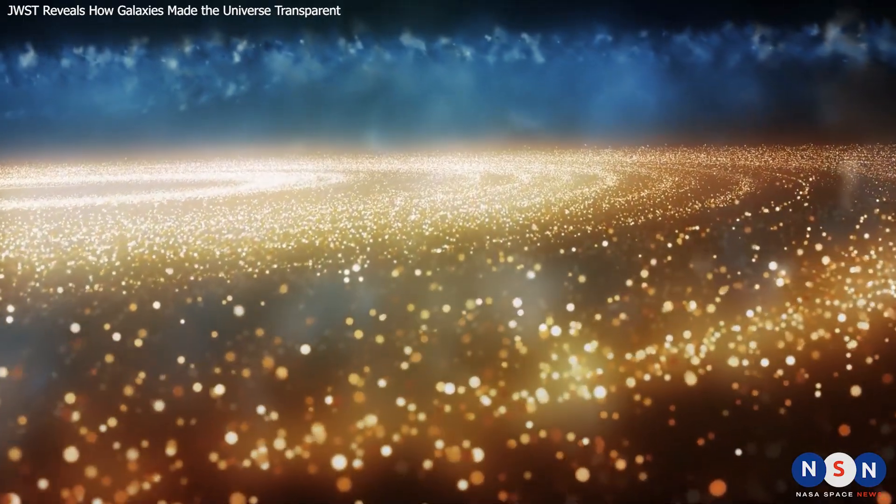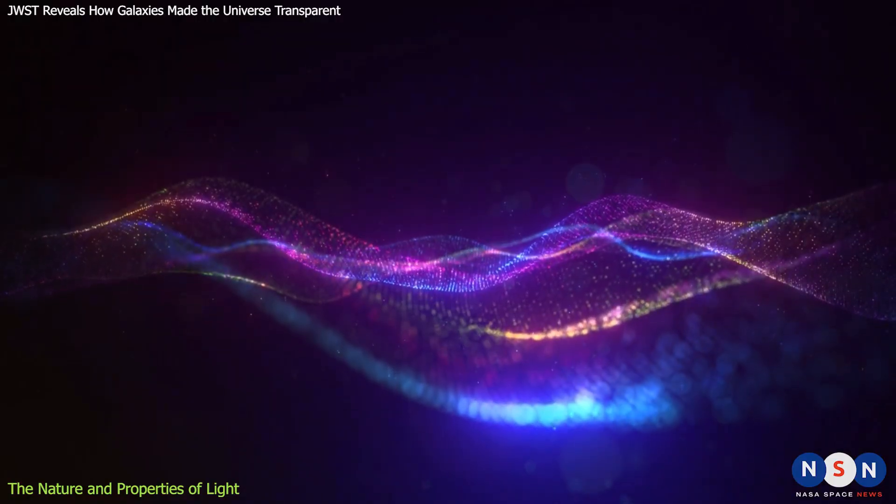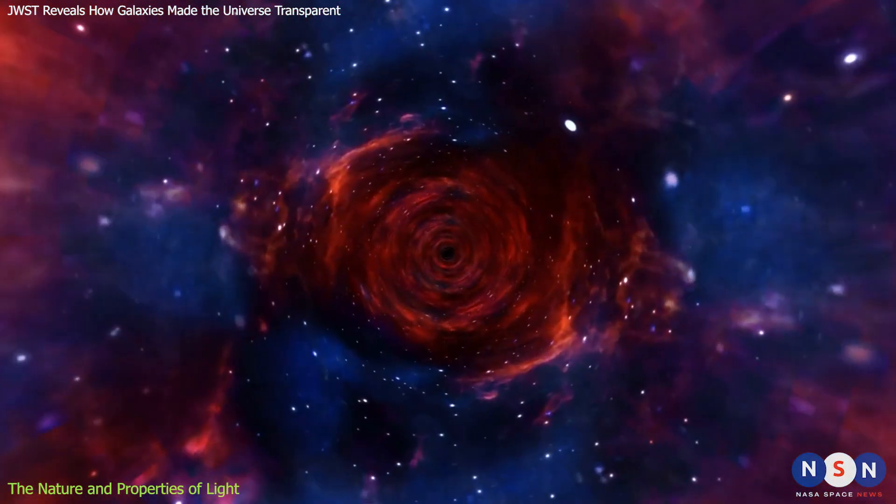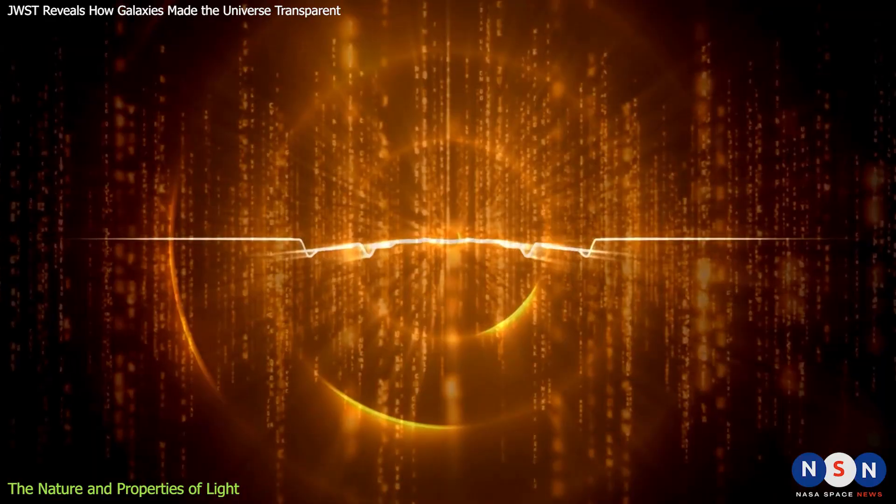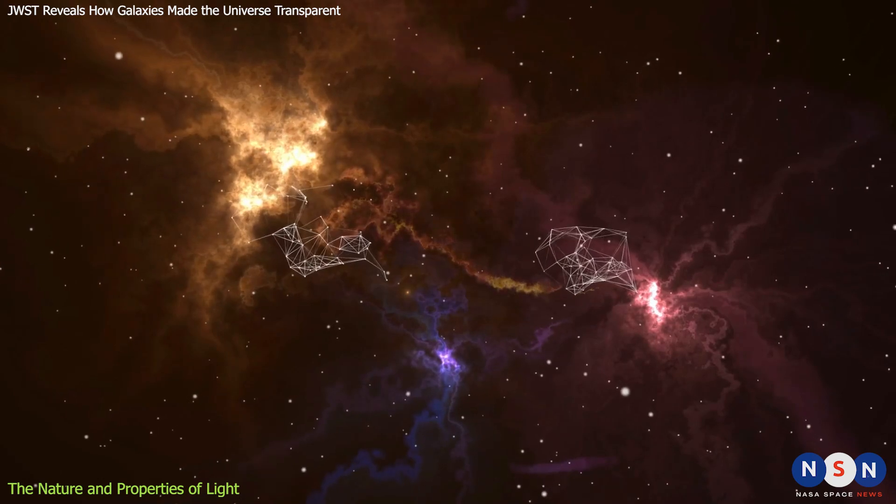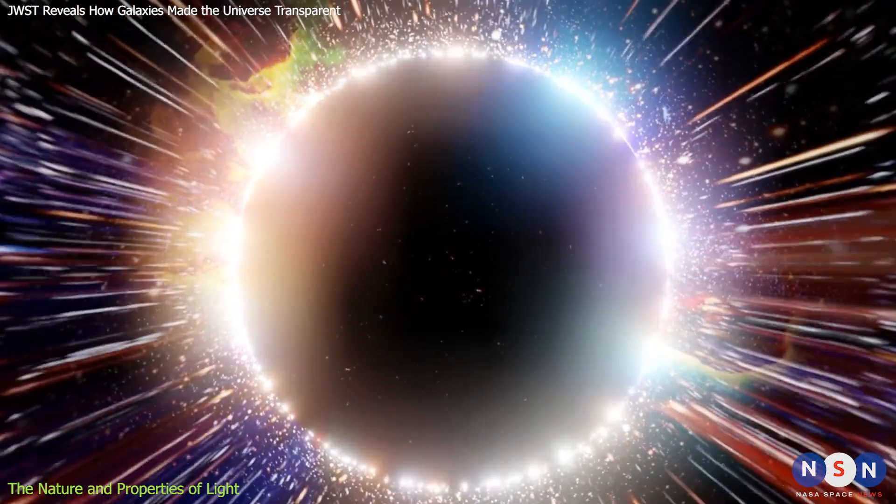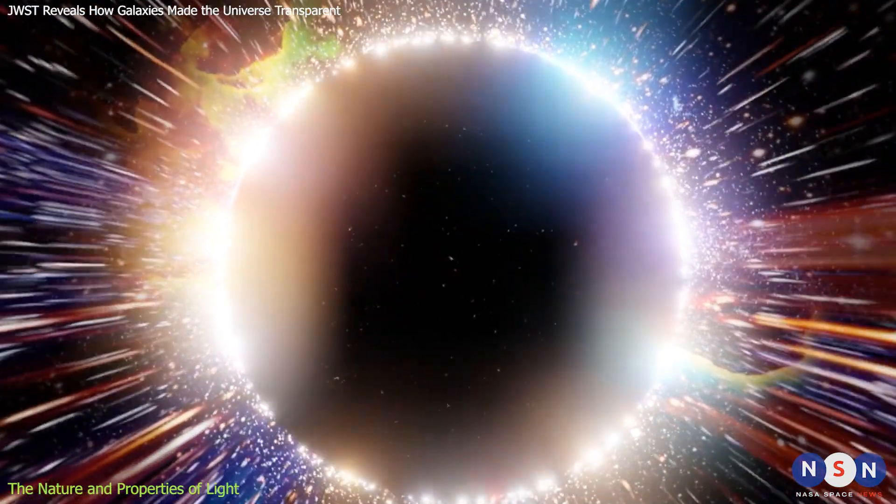Light is one of the most fascinating and mysterious aspects of nature. It is both a wave and a particle. It can travel at incredible speeds and can interact with matter in various ways. Light is also the main source of information we have about the universe, since it carries the signatures of the objects that emit or reflect it.